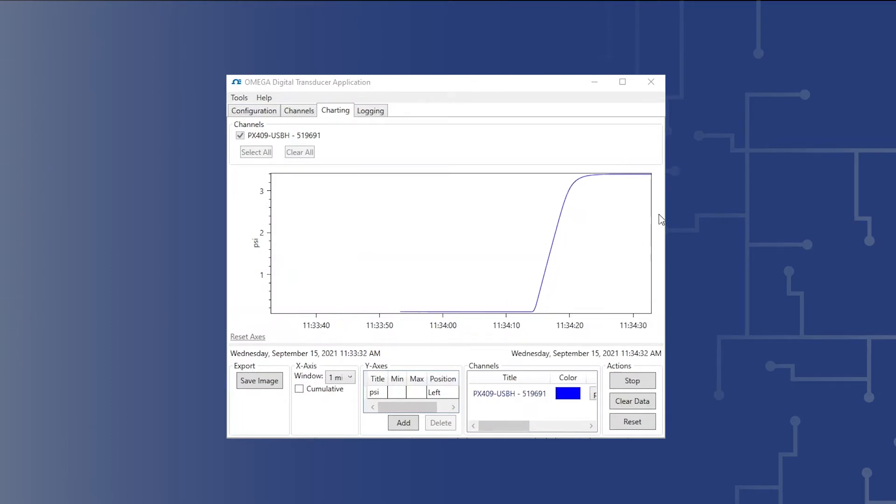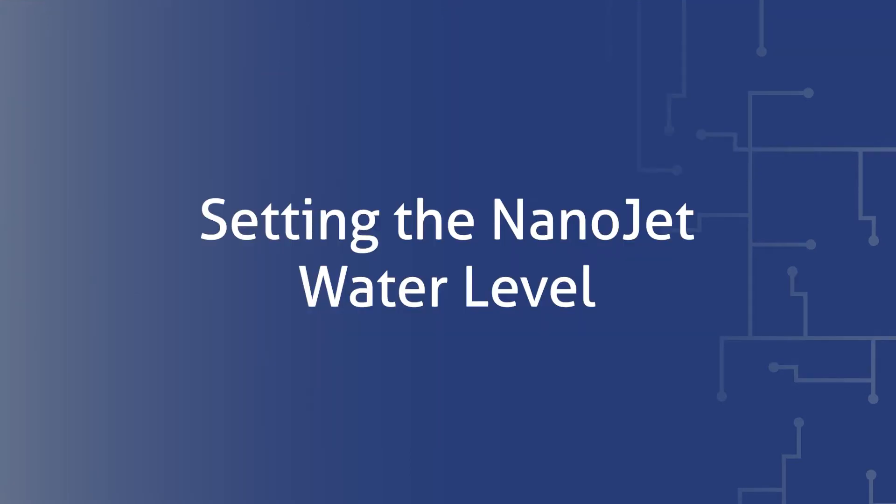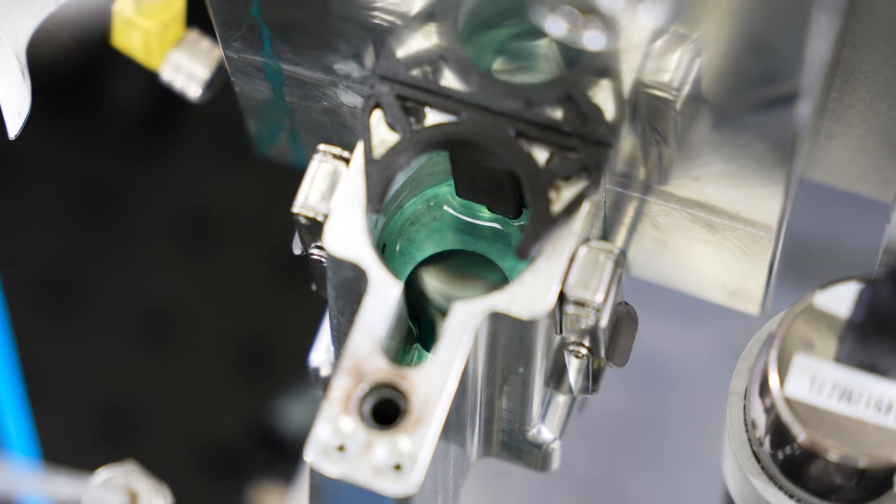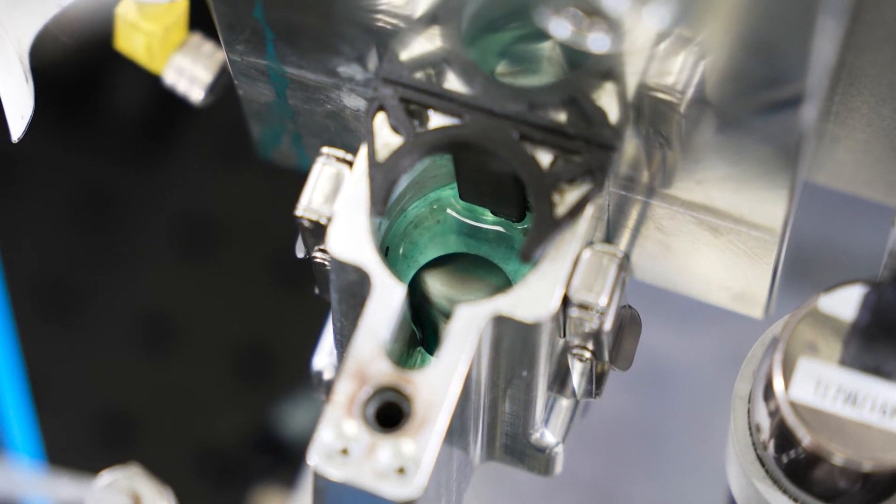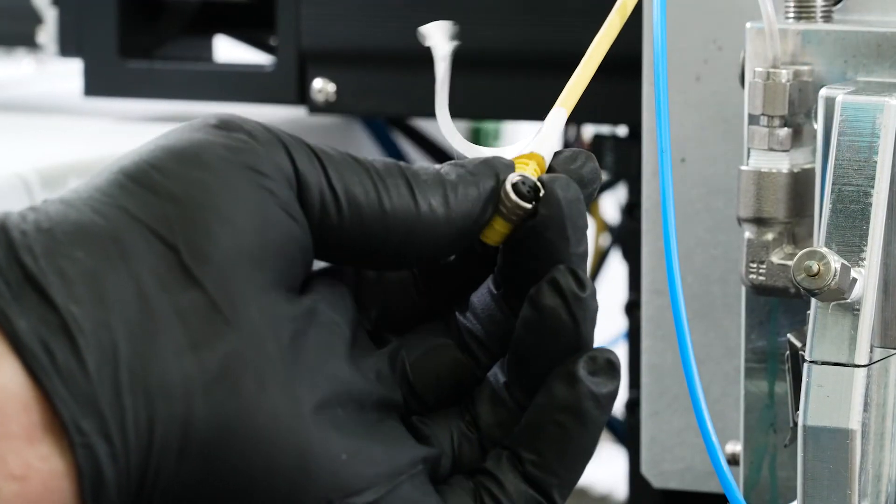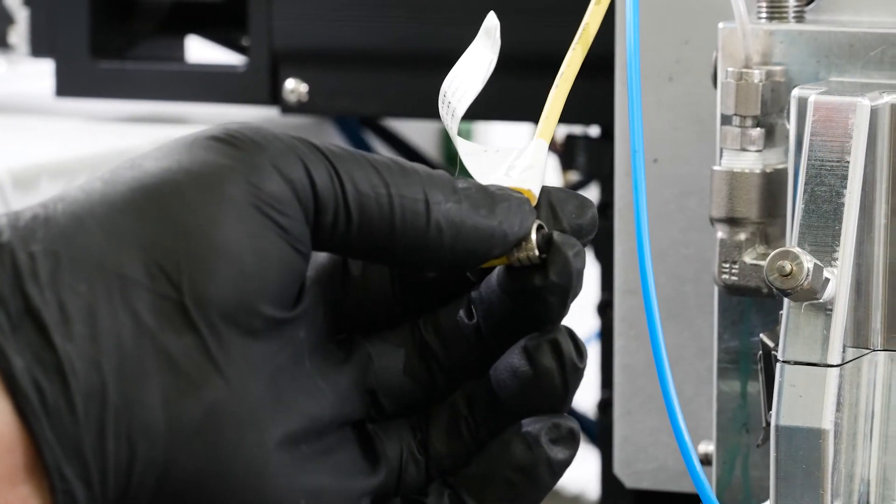12. Once the NanoJet system is leak-free, move on to the next steps. The next step is to verify that the water level in the atomizer base is set correctly. 13. Note that if this is the first time the NanoJet system is being set up, the yellow power cable on the right side of the atomizer will be disconnected from its mating connector on the atomizer base.